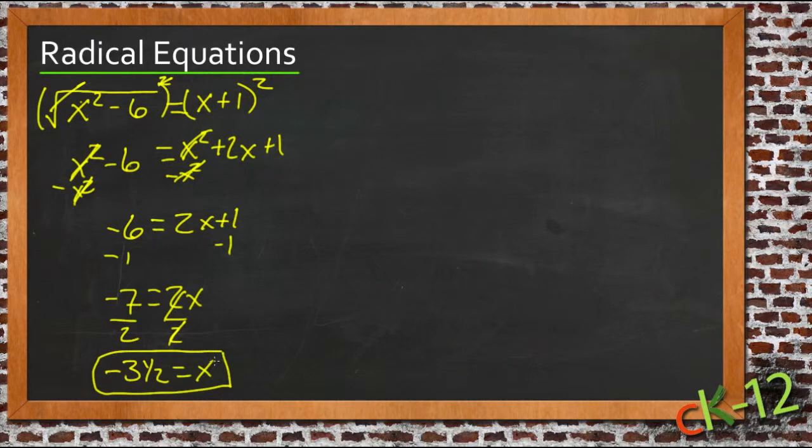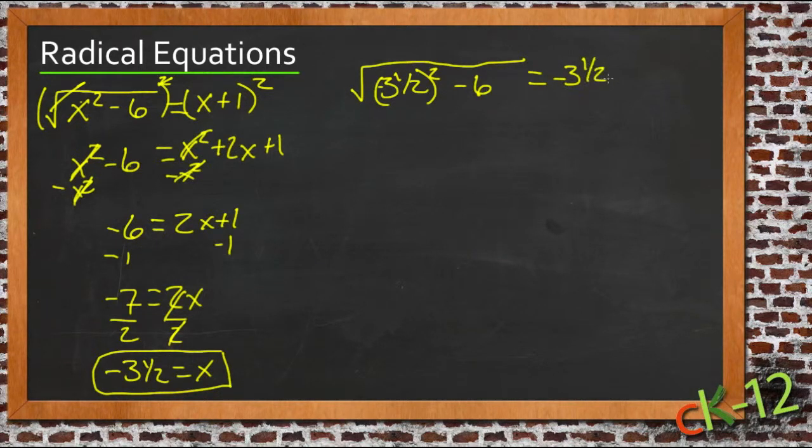Then we need to check our answer. We'll put negative 3 and a half in place of x in our original equation, so we'll have square root of negative 3 and a half squared minus 6 equals negative 3 and a half plus 1.